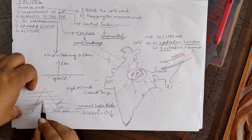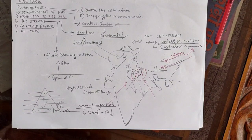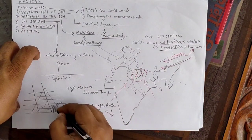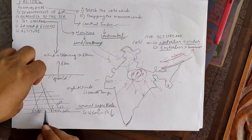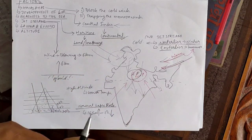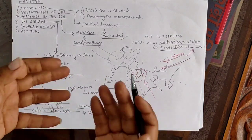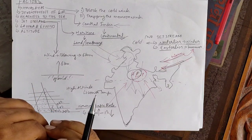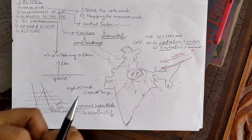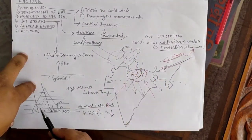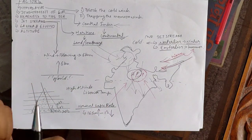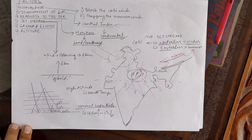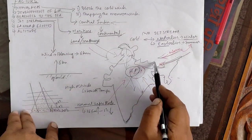The normal lapse rate occurs because of the air column. Air is much denser at the lower region, so when the sun's rays come toward the Earth's surface, more heat is absorbed by the denser air. The denser the air, the more heat is absorbed and the higher the temperature. As air becomes less dense at higher altitudes, it absorbs less heat, resulting in lower temperatures. So with ascent in height, heat absorption decreases and temperature falls.